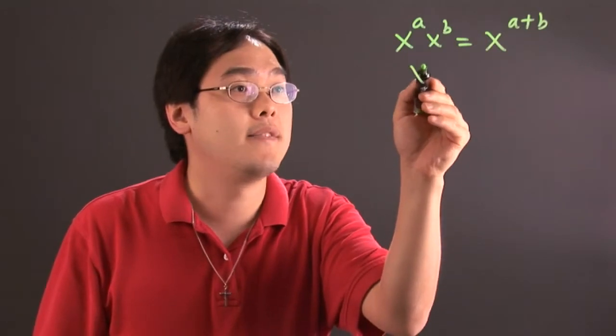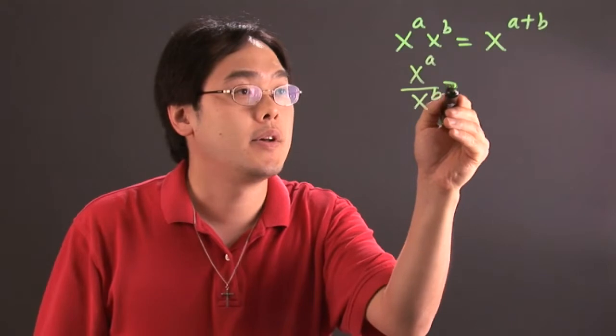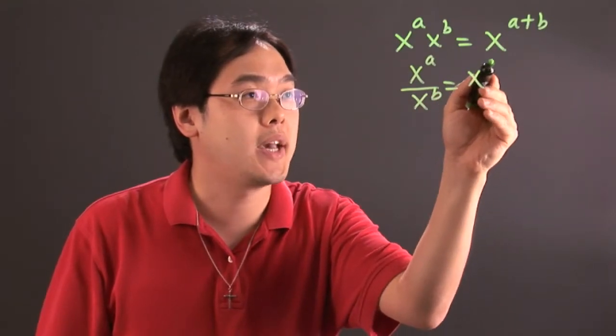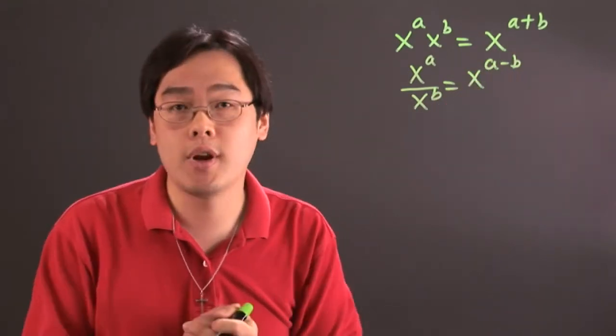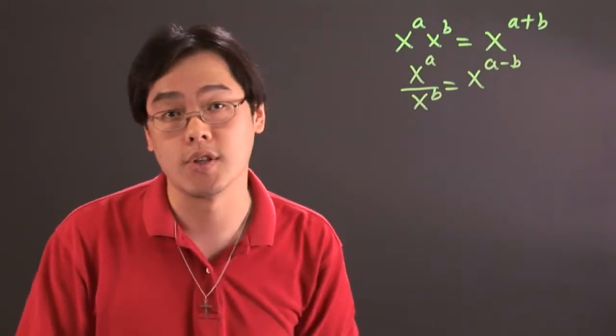When you have x to the a over x to the b, that means you can subtract the exponents, x to the a minus b. Now, both rules operate under the assumption that you have the same bases. If they have different bases, you cannot use these rules.